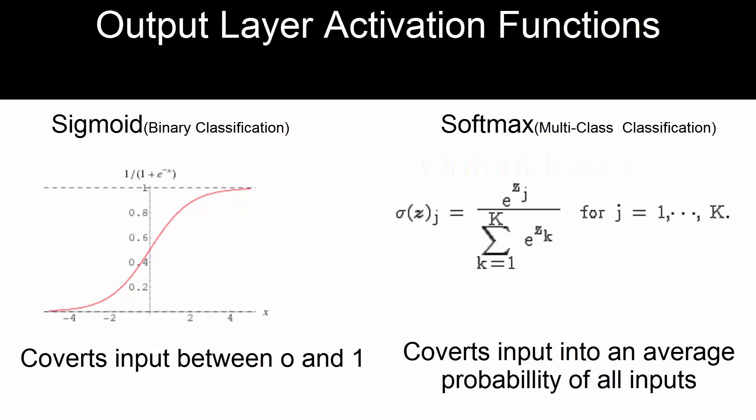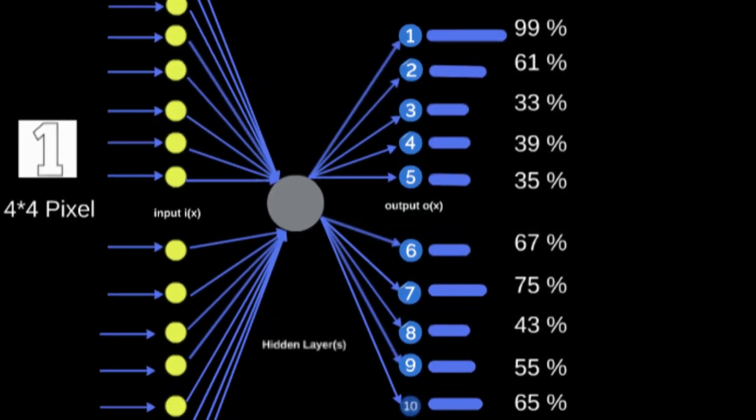Softmax is used for multi-class classification, so where you have multiple classes. It converts the input into an average probability of all inputs, so basically it gives you the probability of one input over all the inputs.